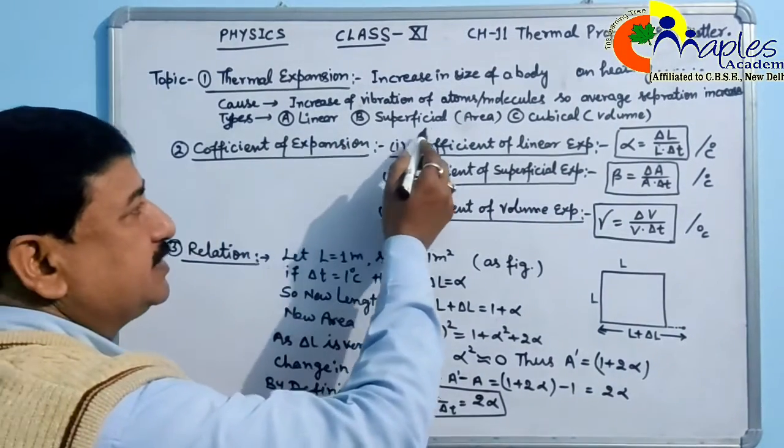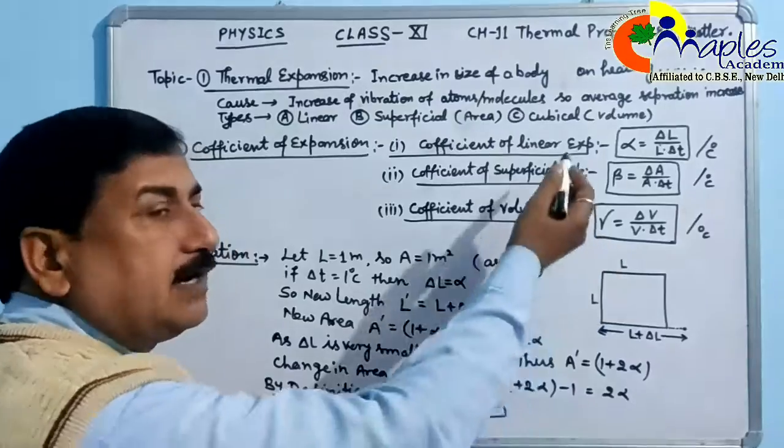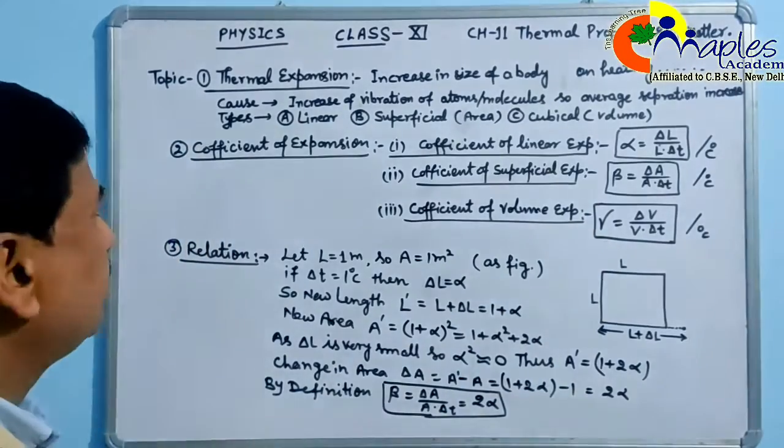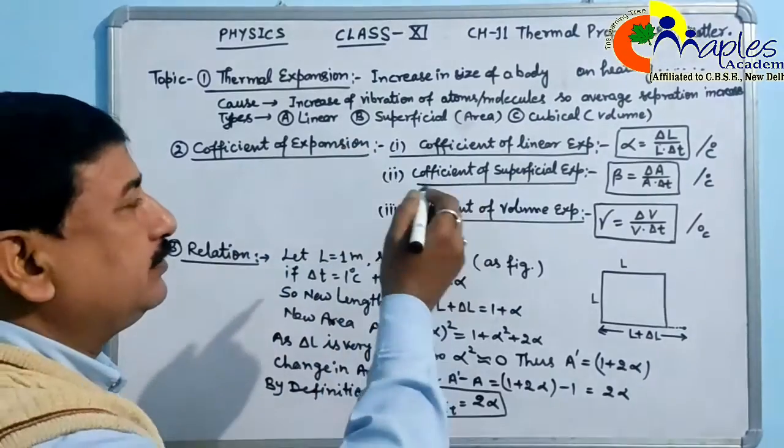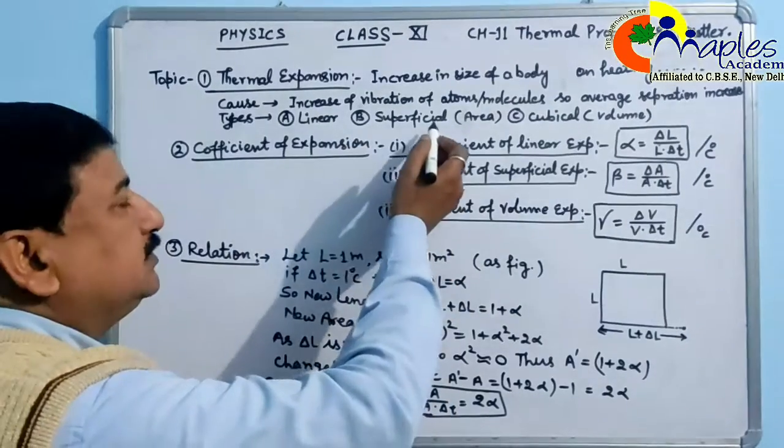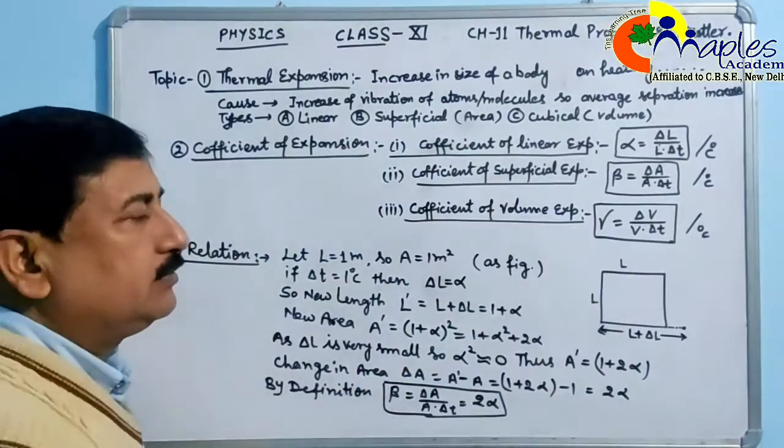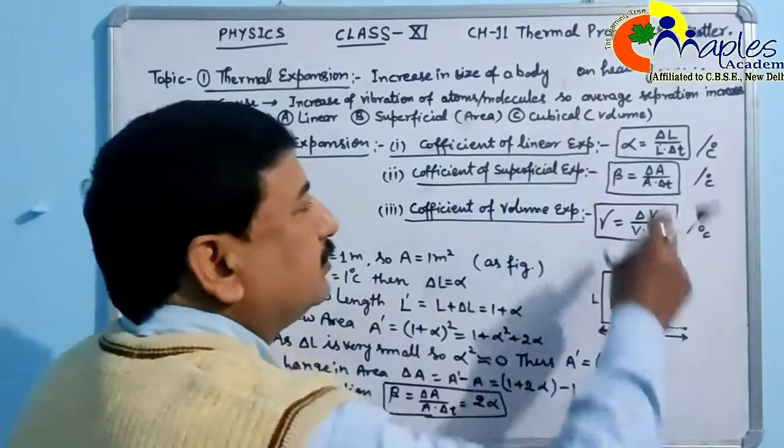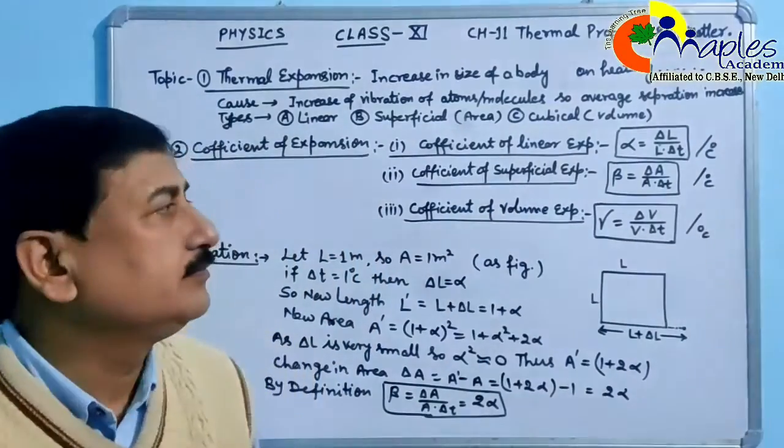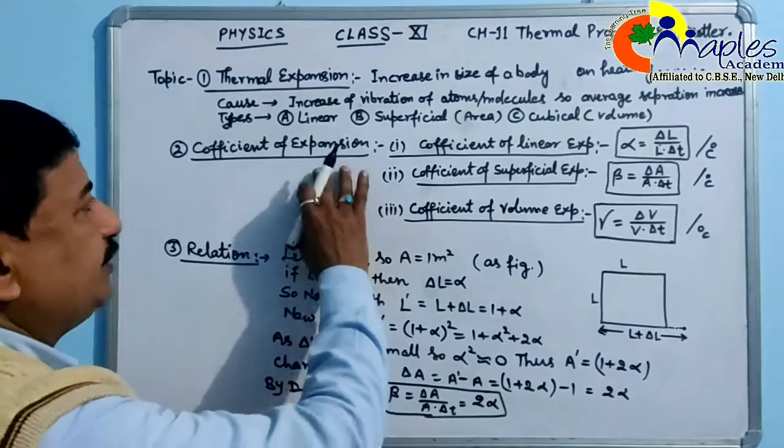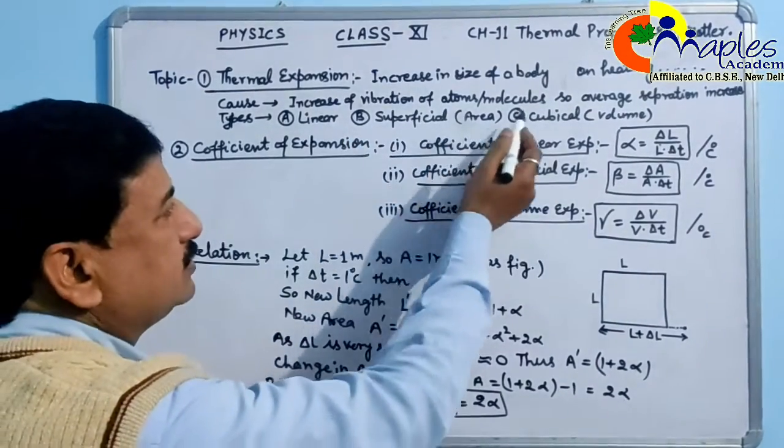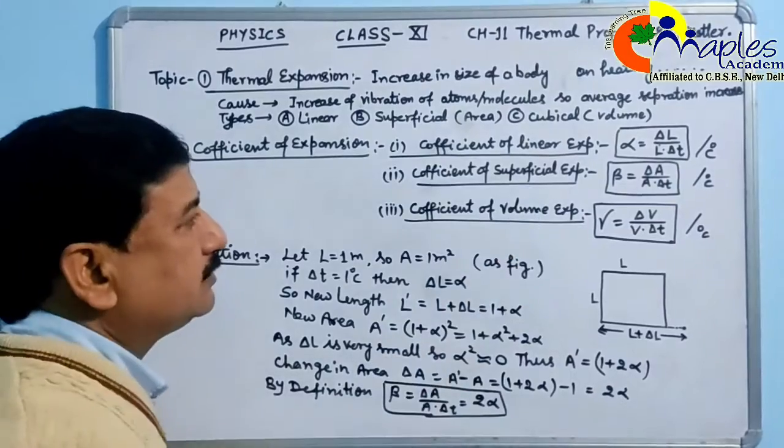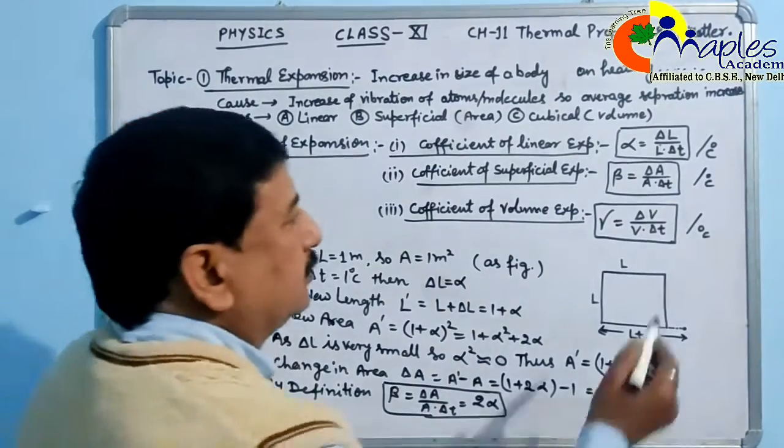There are three types: linear expansion, superficial (area) expansion, and cubical (volume) expansion. When heating causes length to increase in one dimension, that's linear expansion. When area increases, that's superficial expansion. When all dimensions increase, that's cubical expansion. We have three coefficients: coefficient of linear expansion, coefficient of superficial expansion, and coefficient of volume expansion.